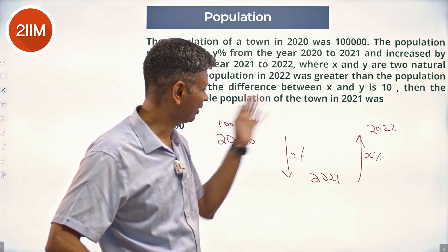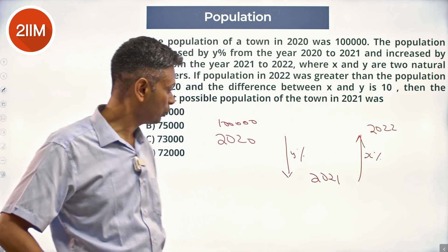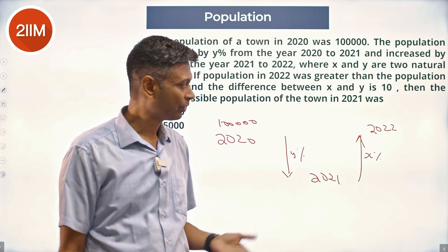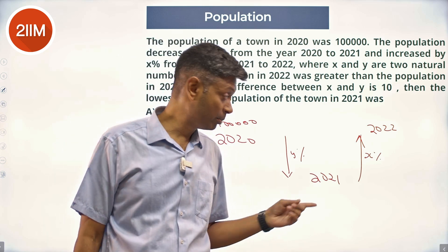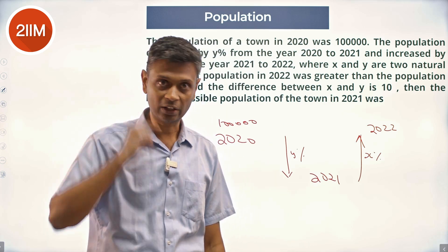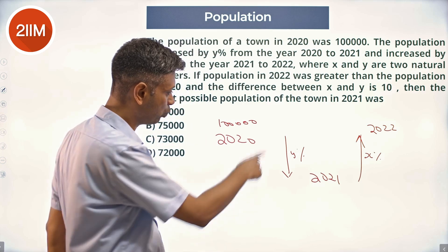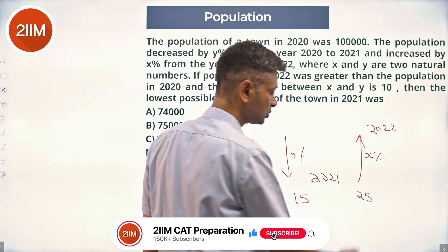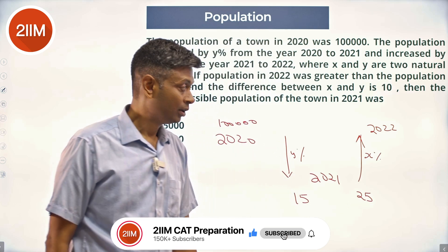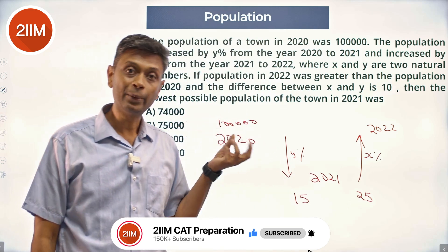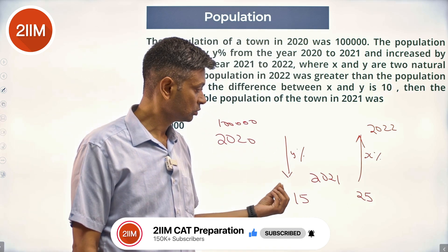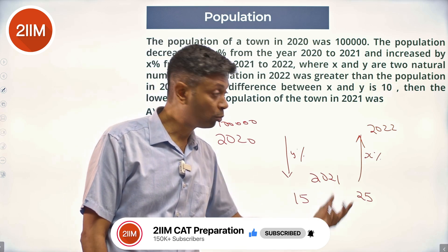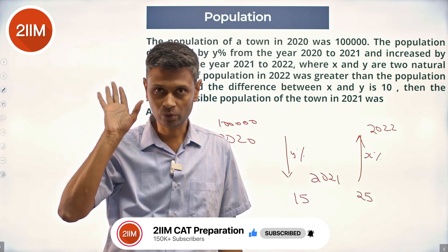2022 is greater than 2020. So we take 2020, decrease it by some percentage, then increase it by a higher percentage because the base is lower, so the total goes higher. If y were say 15, x will have to be 25. So 100,000 into 0.85 into 1.25 should be more than 100,000.